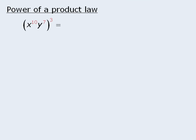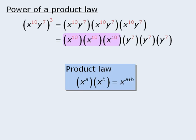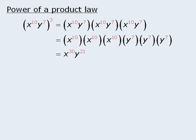One way to simplify this expression is to rewrite it as the following product, and then rearrange the terms. Now to find the product of these three terms, we can apply the product law, which says we must add the exponents to get x to the power of 30. Similarly, we can apply the product law here to get y to the power of 21. So x to the power of 10 times y to the power of 7, all to the power of 3, is equal to x to the power of 30 times y to the power of 21.